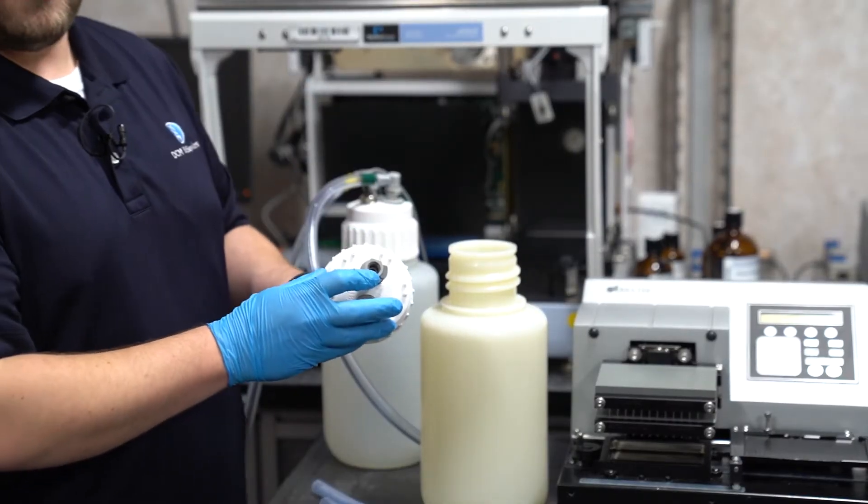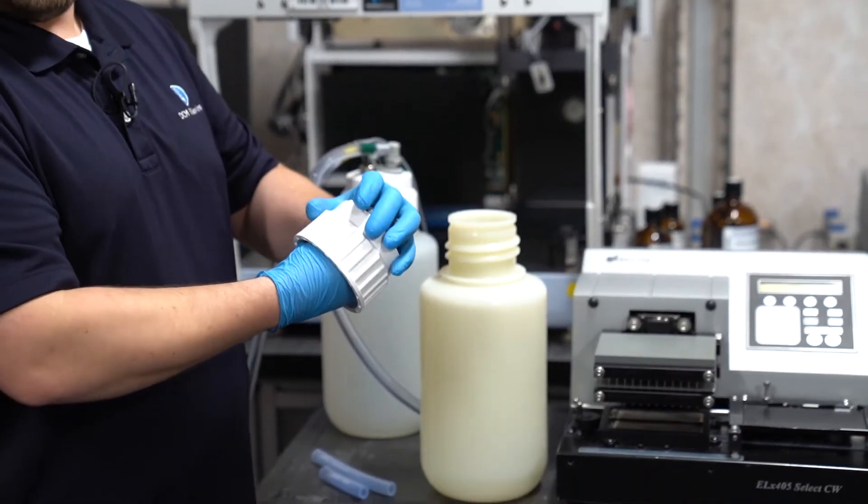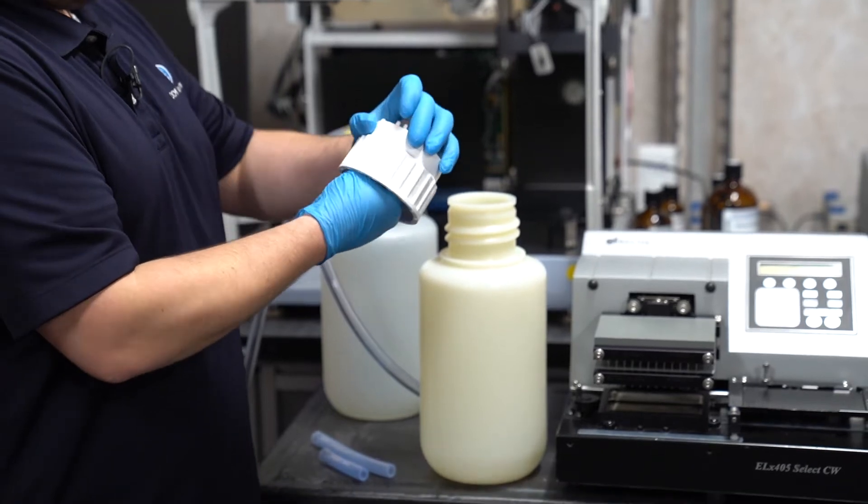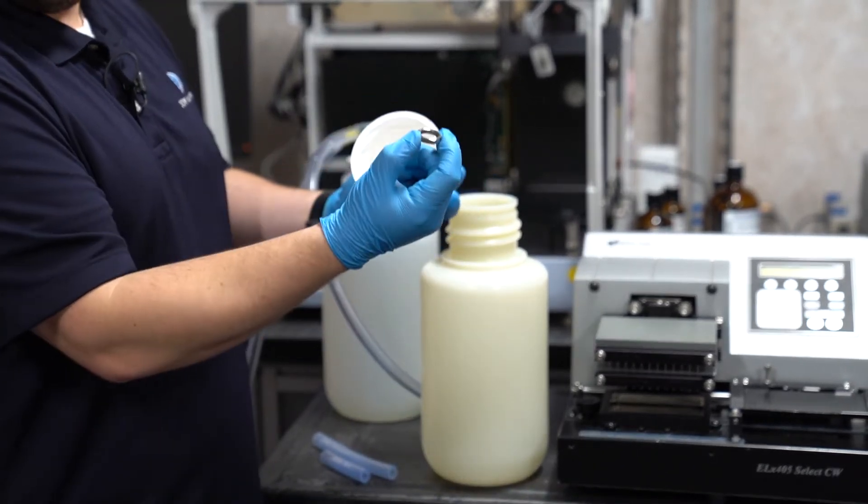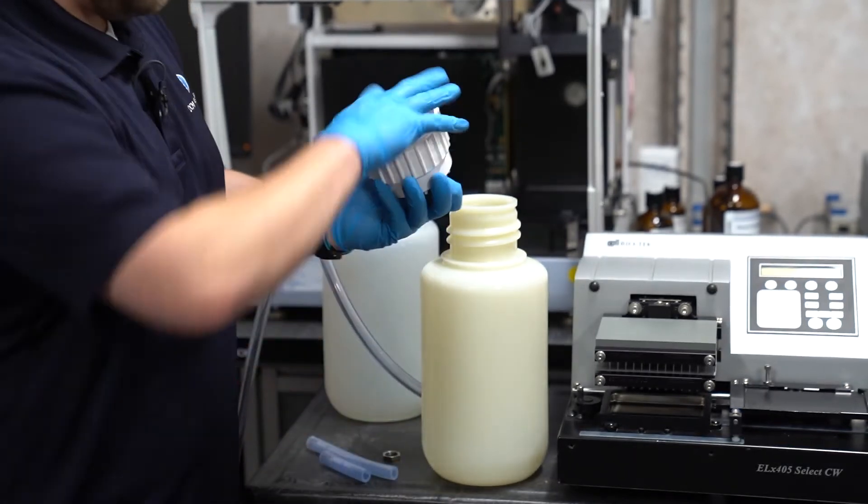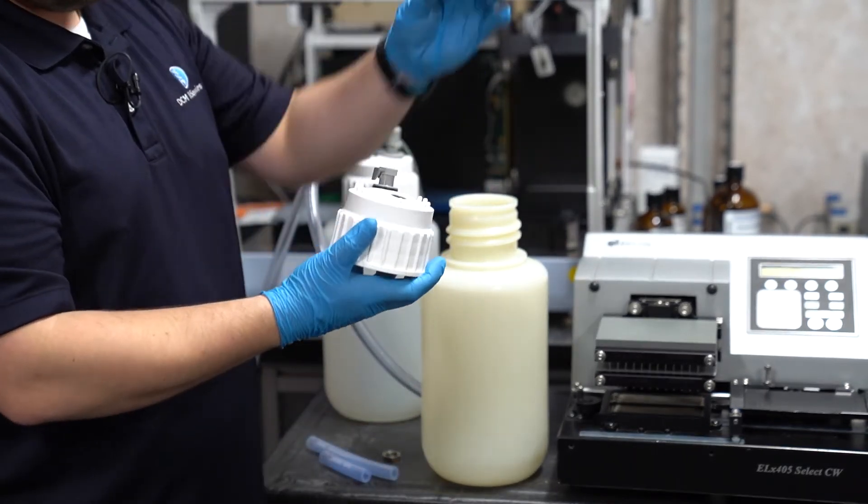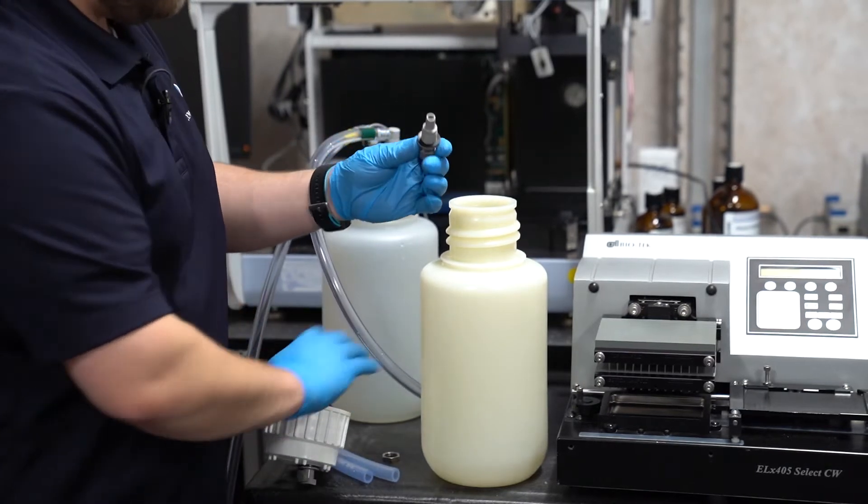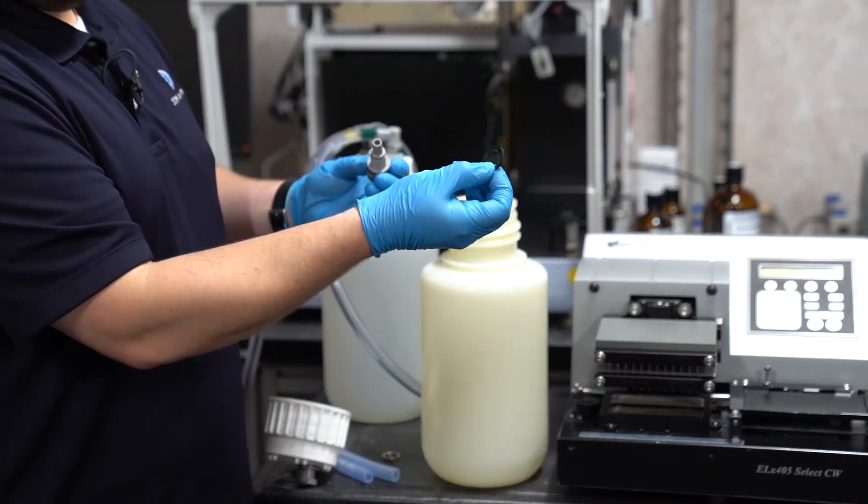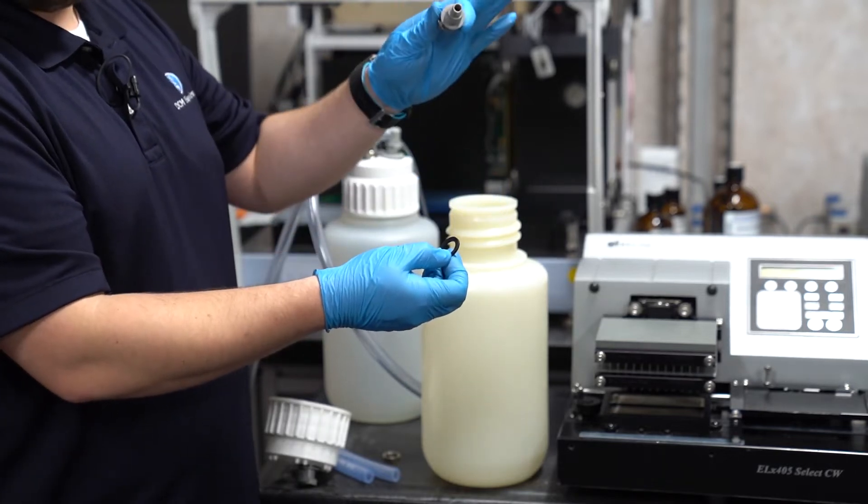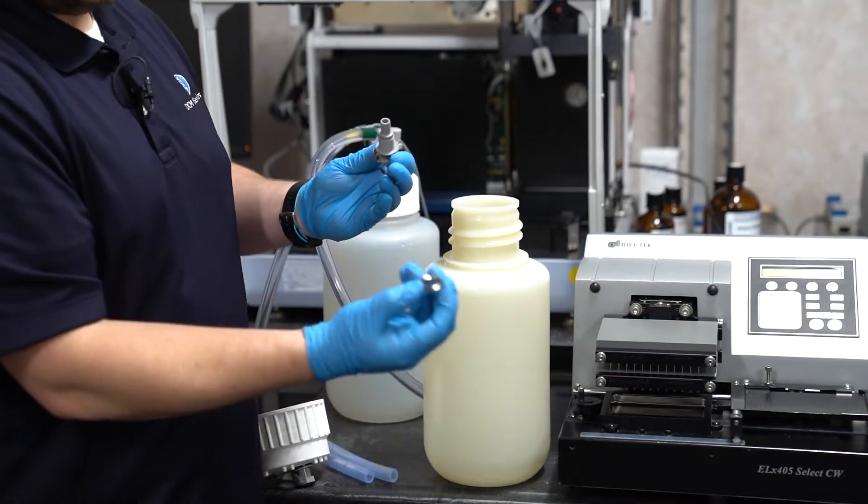Should you need to replace one of these fittings, simply loosen the lock nut, and remove it from the end of the fitting, and pull the female fitting up and through the top of the cap. Here we can see the individual components. We have the fitting gasket, the female fitting itself, and the lock nut.